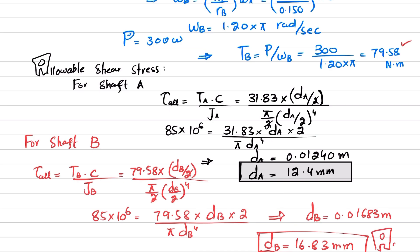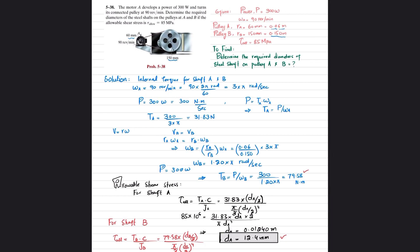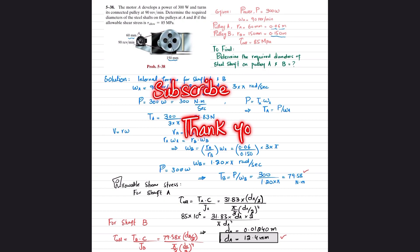These are the required diameters: the shaft for pulley A is 12.4 millimeters and the shaft for pulley B is 16.83 millimeters. That was all about problem 5-38. If you're new to my channel, please subscribe and press the bell icon for notifications. If you have any questions, ask in the comment section. Thank you for watching.